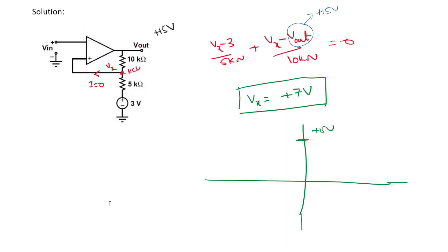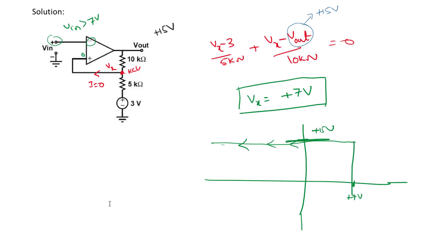With the output initially at plus 15 volts, Vx is found to be plus 7 volts. This means when V_in is less than plus 7 volts, the positive terminal voltage is higher and the output remains at plus 15 volts. When V_in is greater than 7 volts, the negative terminal voltage becomes higher, switching the output to minus 15 volts.